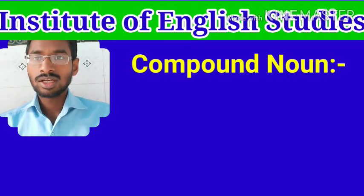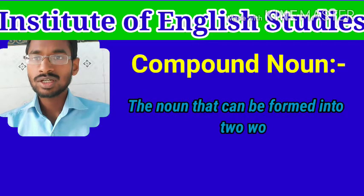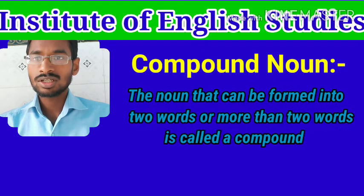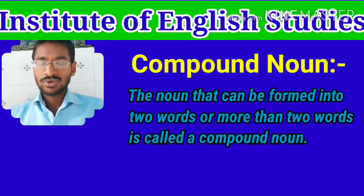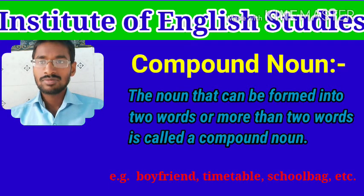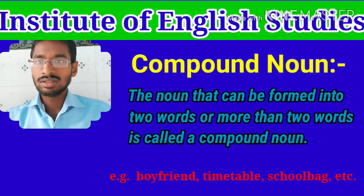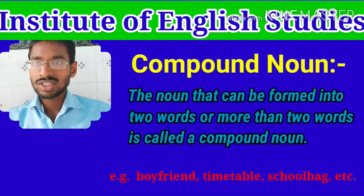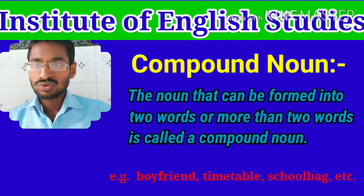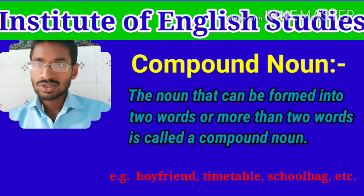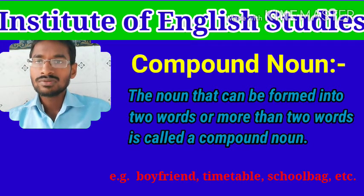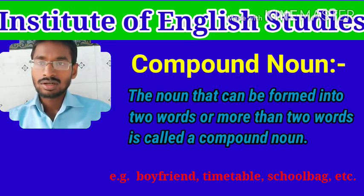Compound noun: the noun that can be formed into two words or more than two words is called a compound noun. For example: boyfriend, timetable, schoolbag, etc. When we divide the word timetable it becomes time plus table. When we divide schoolbag it becomes school plus bag. And boyfriend is divided into boy plus friend.